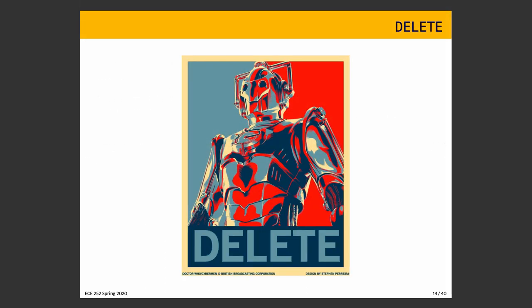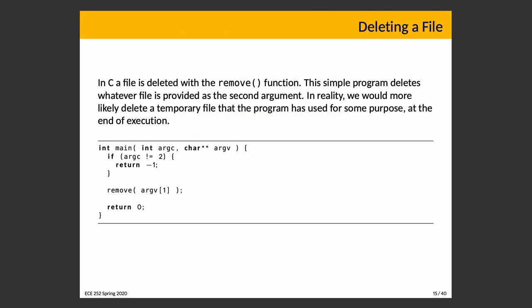In C, a file is deleted with the remove function. This simple example program deletes whatever file is provided as the second argument. More realistically, you would create a temporary file and then use remove to delete it when done. Deletion simply marks the space as not allocated and removes the file from the directory listing — it doesn't actually erase any data. The file system forgets the file's existence, but the data may still be recoverable if the space hasn't been overwritten.